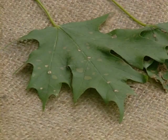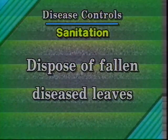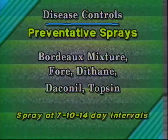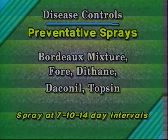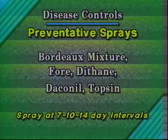Anytime leaves drop, rake them up and dispose of them because they'll reinfect the plant. Next year when the leaves start to unfurl and come out, you have to do preventative sprays. The sprays registered for these types of foliar leaf diseases include copper products like Bordeaux mixture or copper sprays, Dithane, Daconil, and Topsin — some of the most common ones. You have to apply them every 7, 10 to 14 days depending upon the label for your particular plant.